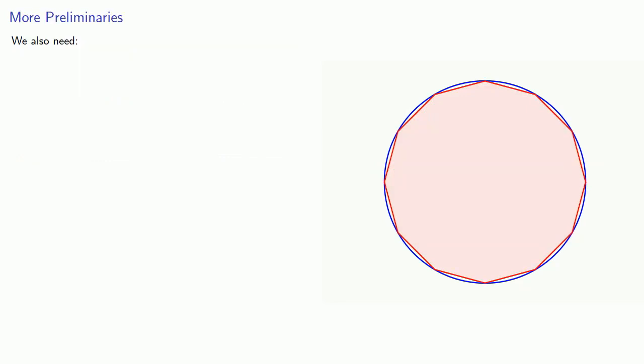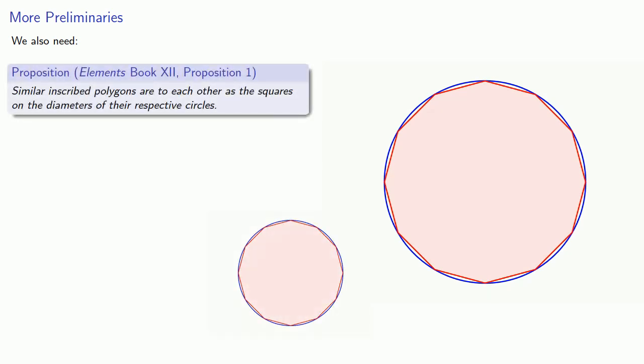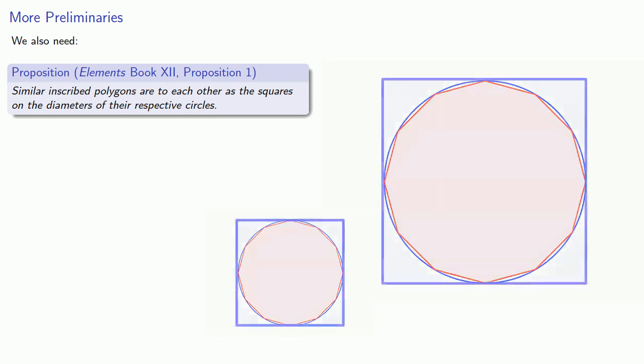Now before we can launch into Euclid's discussion of the area of a circle, we'll need one more proposition. Book 12, Proposition 1. Similar inscribed polygons are to each other as the squares on the diameters of their respective circles. This can be proven without the principle of exhaustion, and is just a straight area proof.